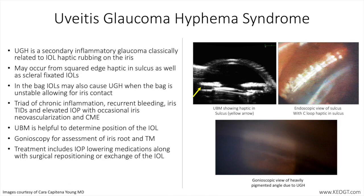You can see an image of that on endoscopy with a haptic sitting in the sulcus. Here's the anterior portion of the capsular bag, and the haptic is clearly outside of the capsular bag and sitting in the sulcus. Complications are less likely to occur with rounded PMMA, PVDF, or polypropylene haptics, which are found in three-piece IOL designs.